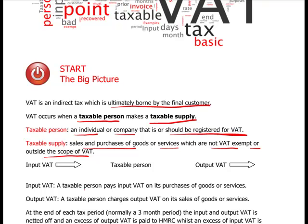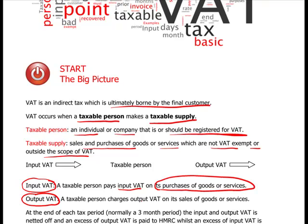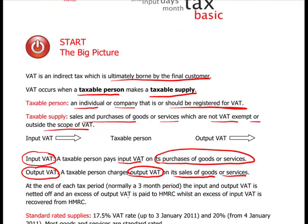The jargon you must become familiar with: input VAT is the VAT on purchases of goods or services. When you buy purchases, you are buying something into your business — that's input VAT. Output VAT is what a taxable person charges on their sales — something going out of the business. At the end of each tax period, normally a three-month period, input and output VAT is netted off and the excess of output VAT is paid to HMRC. If you have an excess of input VAT, it's recovered from HMRC — and that's very important for cash flow.